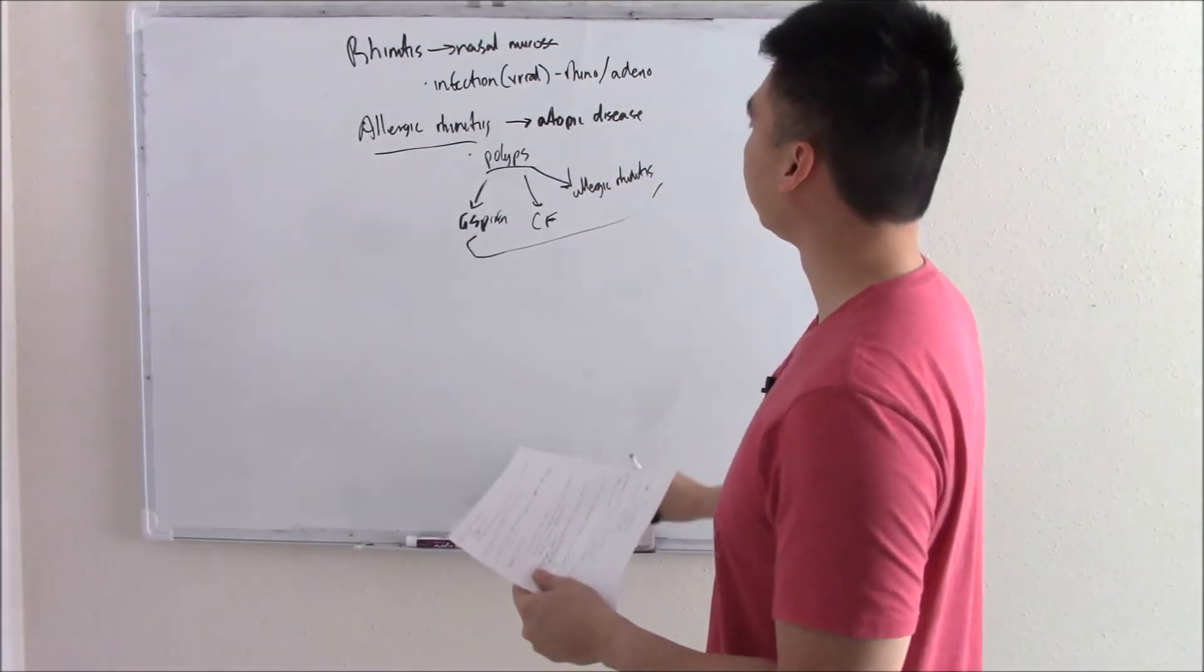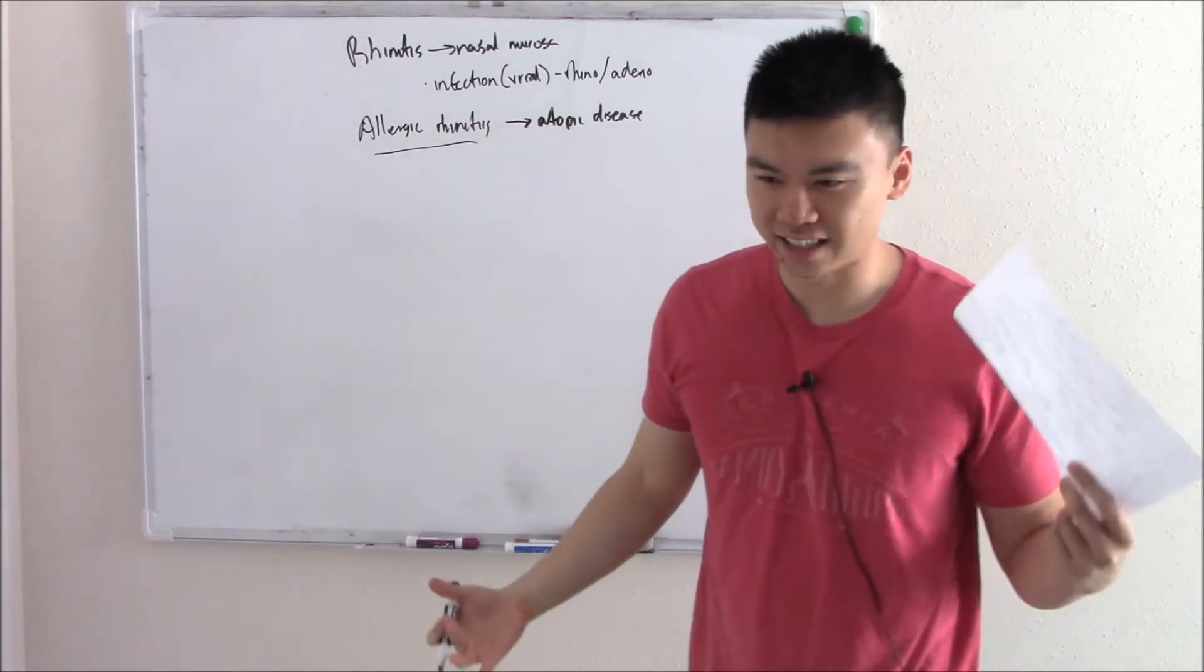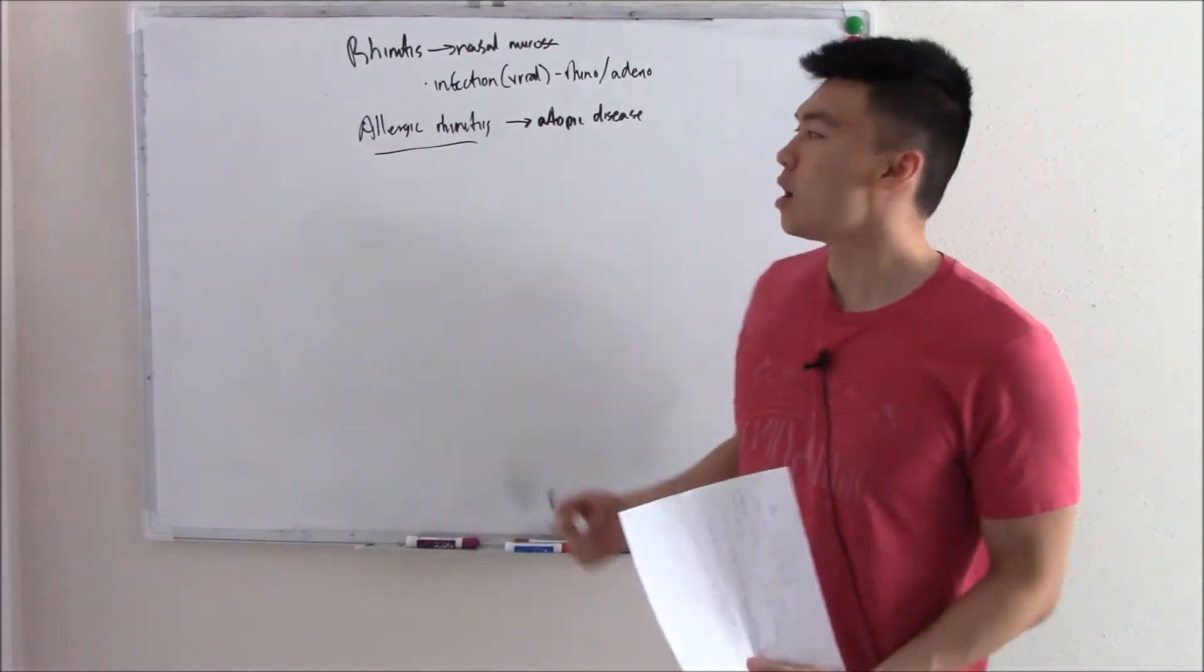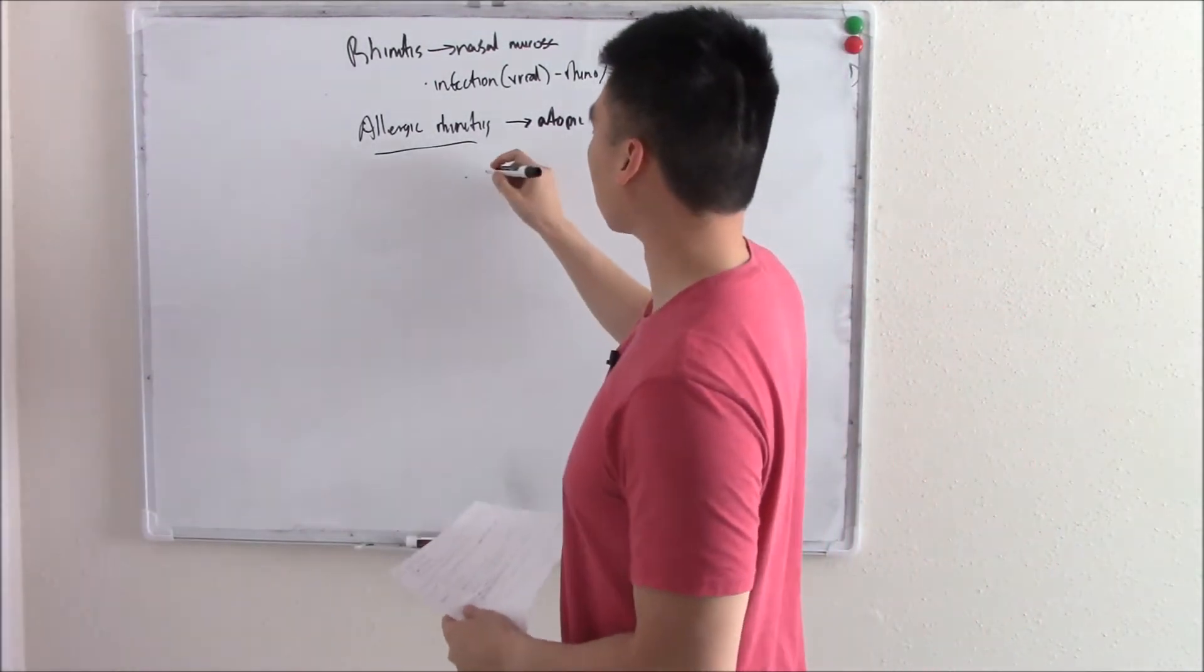This is rhinitis. Now how do we treat it? We can treat allergic rhinitis because it is an atopic disease. That's the whole IgE causing mast cells to degranulate, release their histamine and all that stuff. So one thing, one drug we can use to treat allergic rhinitis is gonna be histamine blockers.